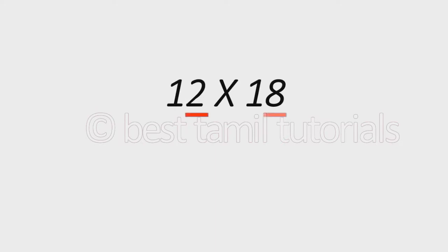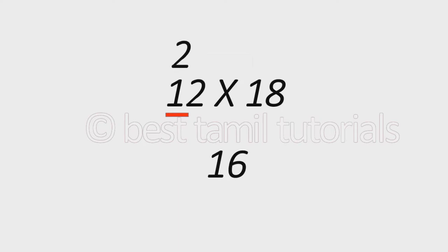For example, 12 into 18. Here, 2 plus 8 is 10. So 2 into 8 will be multiplied: 2 into 8 is 16. So the last part is 16. The first digit is the same — it is 1. The next number is 2.